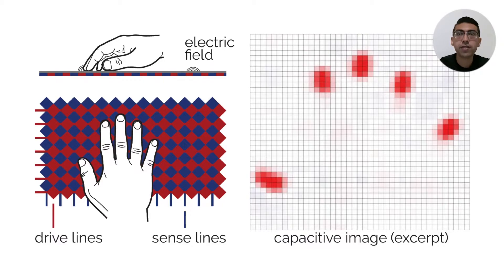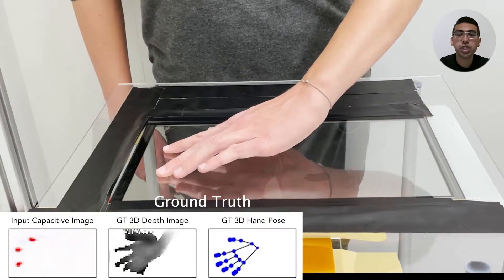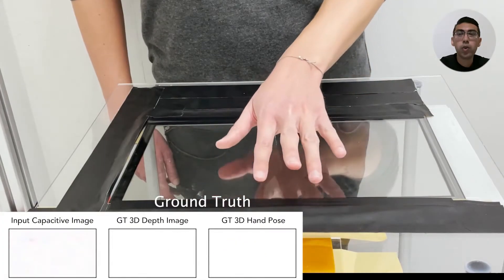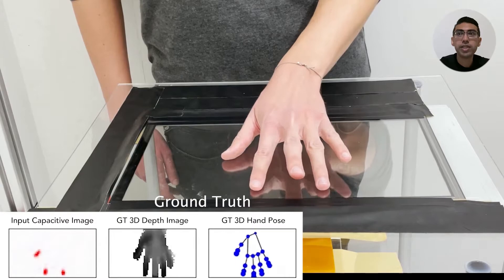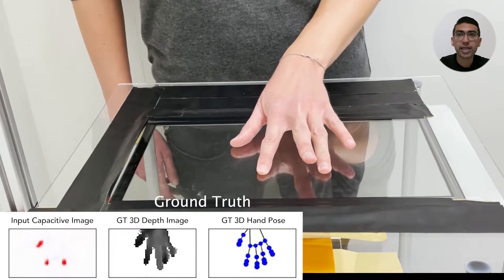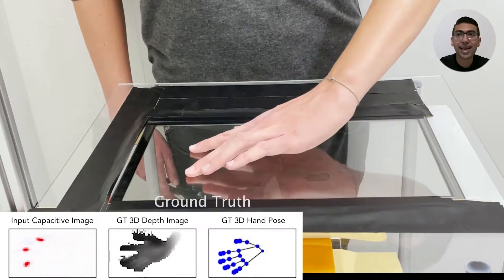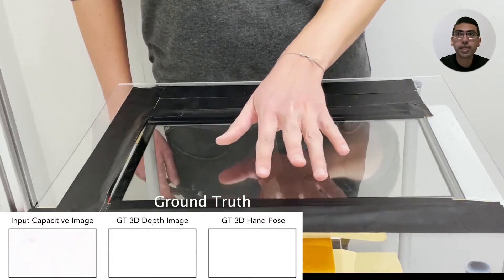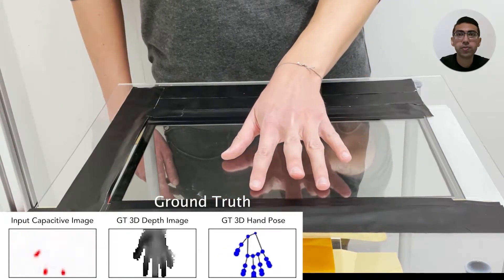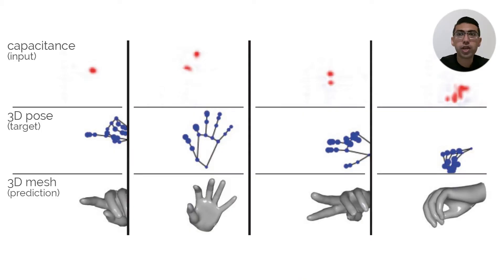This generated capacitive image allows devices such as our smartphones and tablets to locate multiple 2D touch locations. However, these 2D coordinates are only the manifestation of the much more complex 3D configuration of the whole hands, which capacitive touch devices so far remain oblivious to. In this work, we introduce the problem of reconstructing a 3D hand from capacitive images, which encode the sparse observations captured by touch sensors.